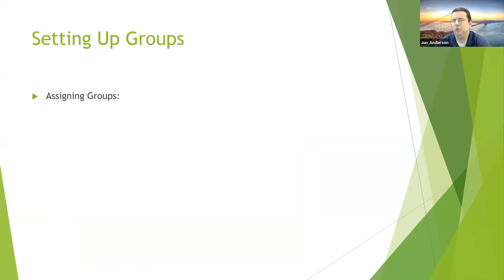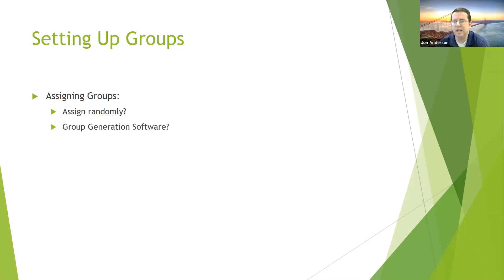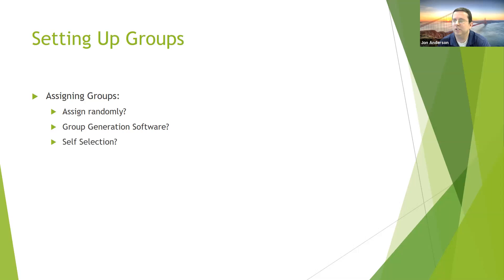This presentation is about using group work in an online math class. One of the big considerations is how do you assign students into groups. Some obvious strategies: you could use your LMS, which often has a group feature and can randomly assign students. There's also group generation software such as CATME, which provides students with a survey, asks demographic questions, and uses algorithms to put students into groups. A third strategy is to let students self-select.